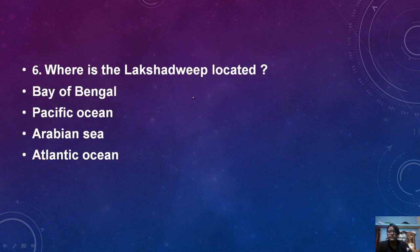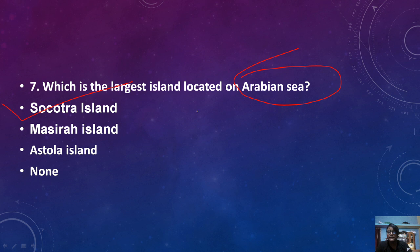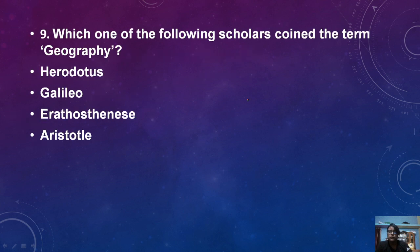Where is Lakshadweep situated? Lakshadweep is located in the Arabian Sea. Which is the largest island located in the Arabian Sea? The answer is Socotra Island. Which is the largest ocean in the world? The answer is the Pacific Ocean — it is the largest ocean in the world.